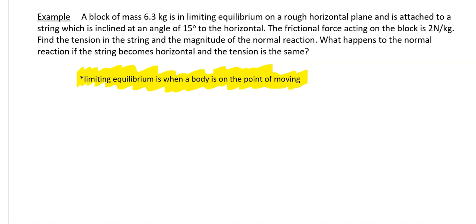In this example we have a block of mass 6.3 kg in limiting equilibrium on a rough horizontal plane attached to a string inclined at an angle of 15 degrees to horizontal. The frictional force acting on the block is 2 N per kg. Find the tension in the string and the magnitude of the normal reaction. What happens to the normal reaction if the string becomes horizontal and the tension is the same?